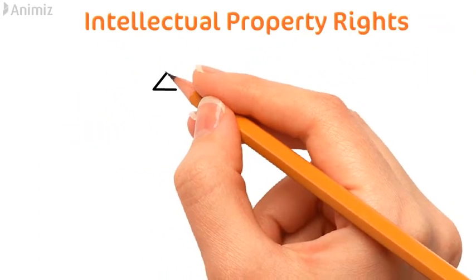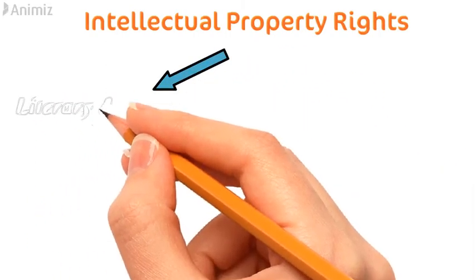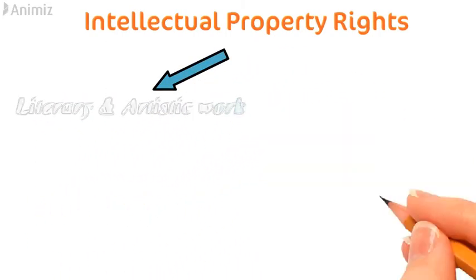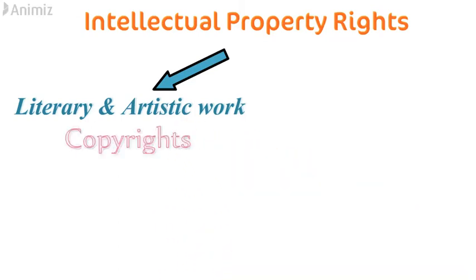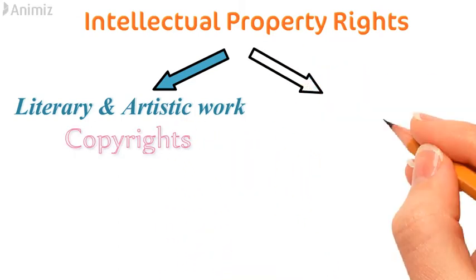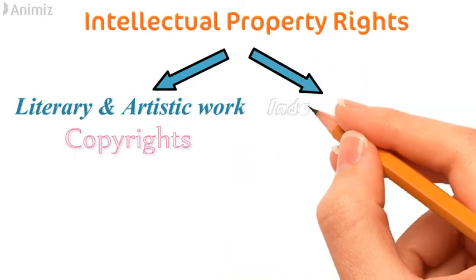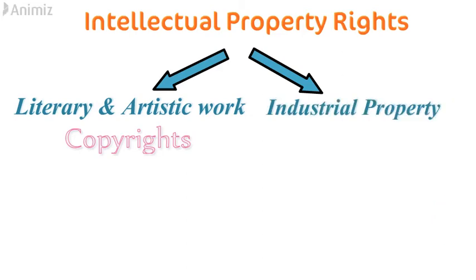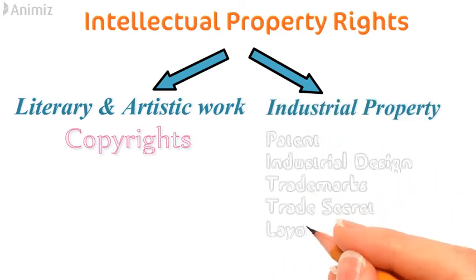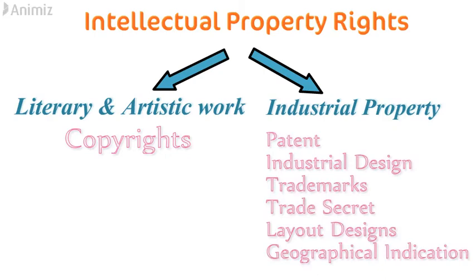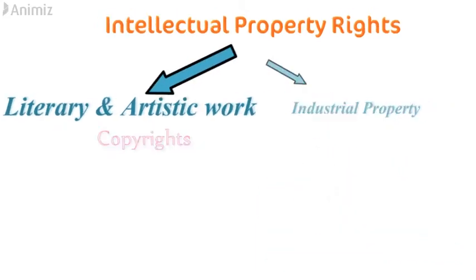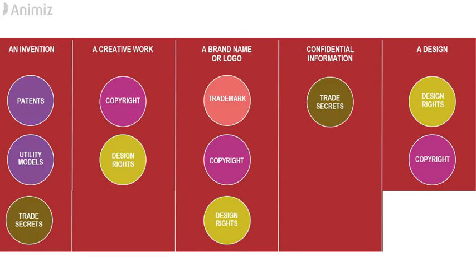Intellectual property rights are divided into two groups. The first one is literary and artistic works, which includes copyrights. The second group consists of industrial property, and it includes patents, industrial design, trademarks, trade secrets, layout designs, and geographical indications.